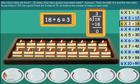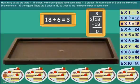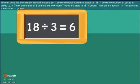There are three 6s in 18. So 3 is the number of cakes in each plate. We can write the division fact in another way also.